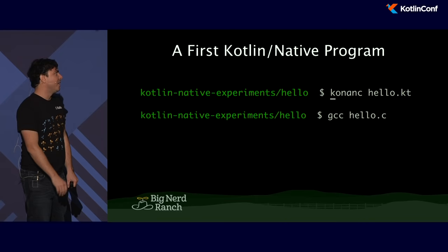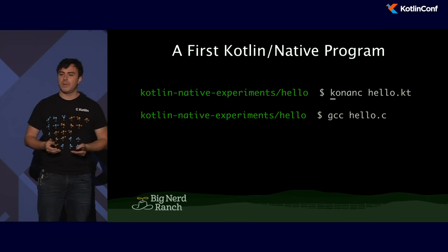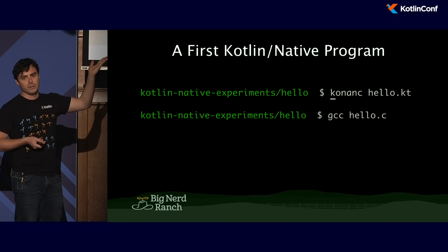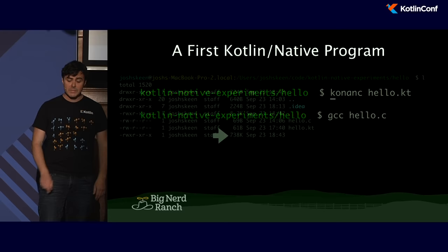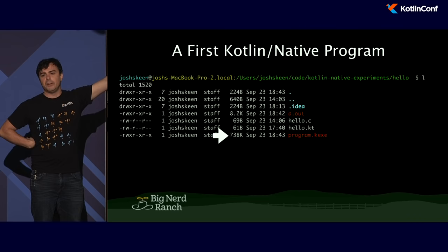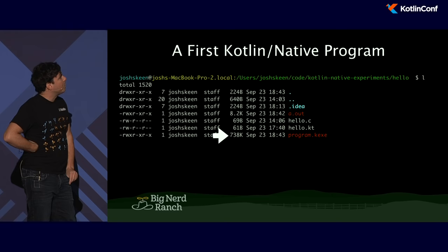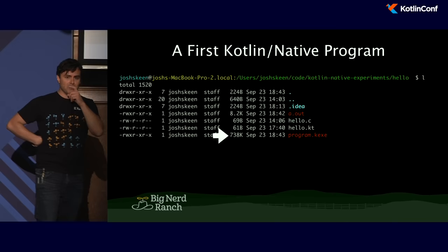The first thing I did was mirror that approach: I got GCC (the GNU C compiler), took a hello.c file and compiled it. Then I took the Konan compiler and took a hello.kt file and compiled it too. The first thing I noticed was: program.kexe is the output from Konan C, and a.out is the output from GCC. The file size — 738k as opposed to 8.2k for hello world. I was like, whoa, there must be more going on under the hood.